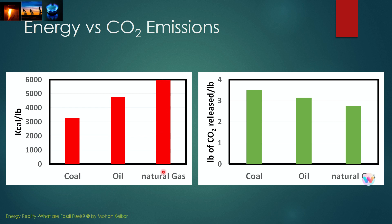Not only does natural gas generate more energy than coal or oil, it also generates less carbon dioxide for every pound burned. The reason is that carbon is more prevalent in coal than in natural gas. If you look at how much CO2 is released: for coal, it's about 3.5 pounds of CO2 for every pound of coal burned; oil generates about 3.1 pounds of CO2 per pound burned; and natural gas generates about 2.75 pounds of CO2 per pound of natural gas burned.